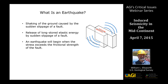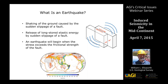An earthquake begins when the stresses driving the fault forward exceed the frictional strength of the fault. The driving stresses, represented by red arrows on opposite sides of the slipping fault, are resisted by clamping stresses. It's the balance between the forces trying to cause the fault to slip against those that keep it locked. Earthquakes occur in all types of settings around the world, not only on plate boundaries but also in the interior of continents, such as here in the United States.